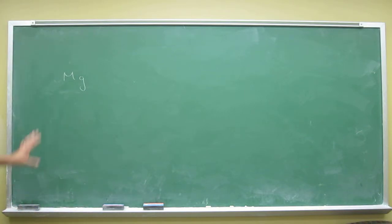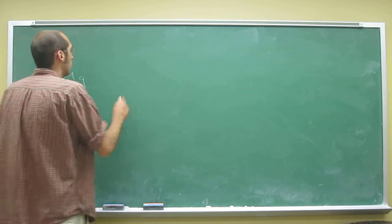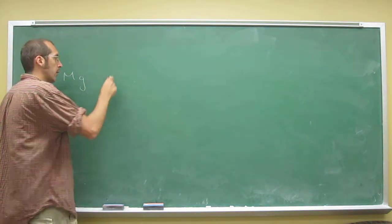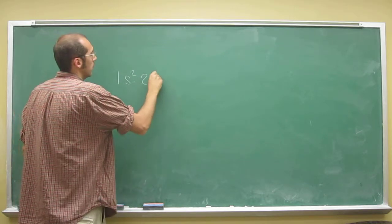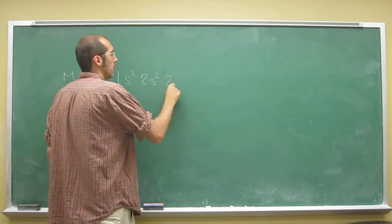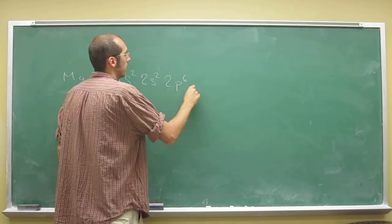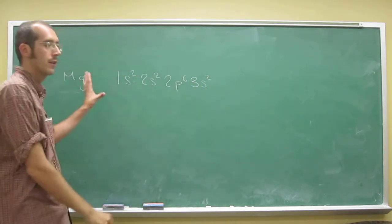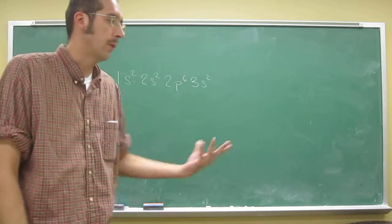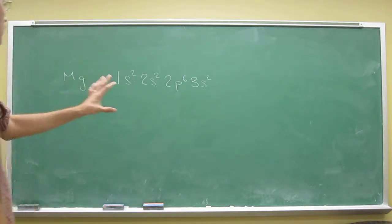Again, I really like to do the electron configuration first. Let's just go ahead and do that. You get it from the periodic table: 1s2, 2s2, 2p6, 3s2. I know the problem doesn't ask for that, but it helps me out and really makes it easy.